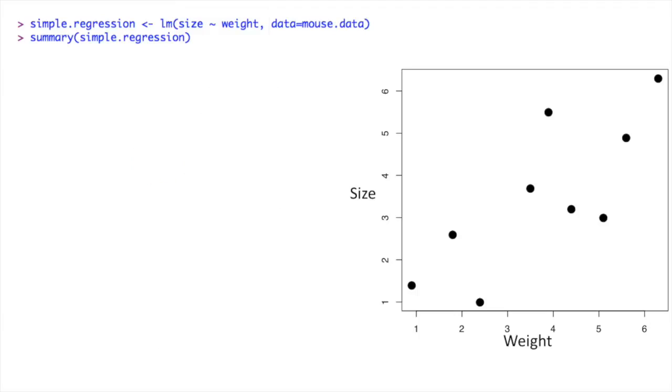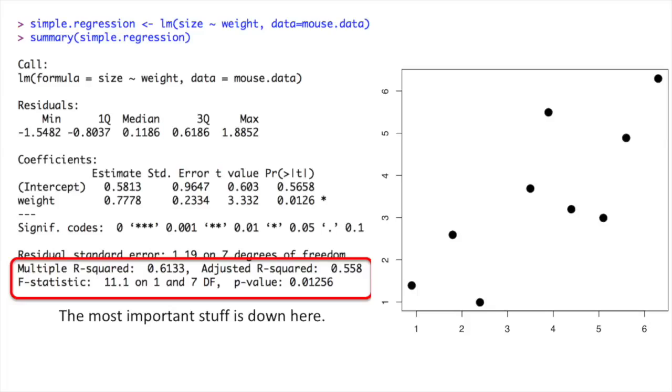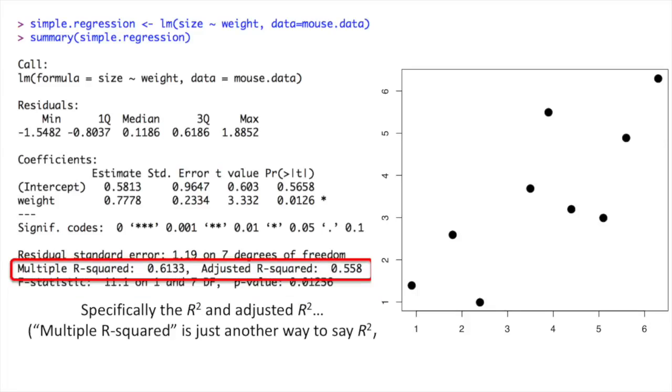Once we've run the linear models function and saved the output in a variable called simple.regression, we can get a summary of that regression using the summary function. Calling the summary function on simple.regression gives us a huge pile of stuff. The most important stuff is down here. Specifically, the R-squared and the adjusted R-squared. Multiple R-squared is just another way to say R-squared, by the way. Also, for simple regression, the multiple R-squared value, or just plain old R-squared, is the one we're interested in. The adjusted R-squared only applies when we have more complicated models. We'll use it later when we do multiple regression.